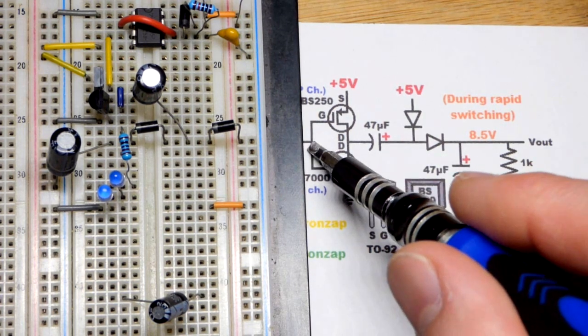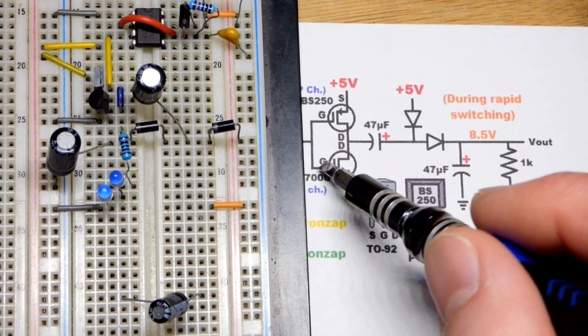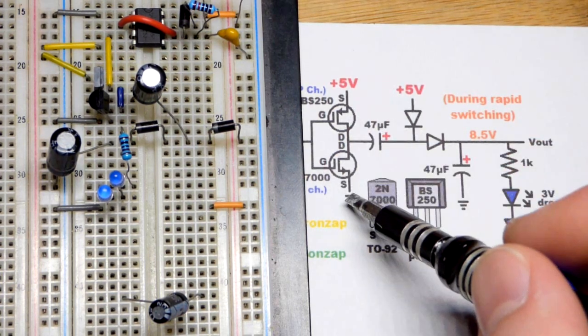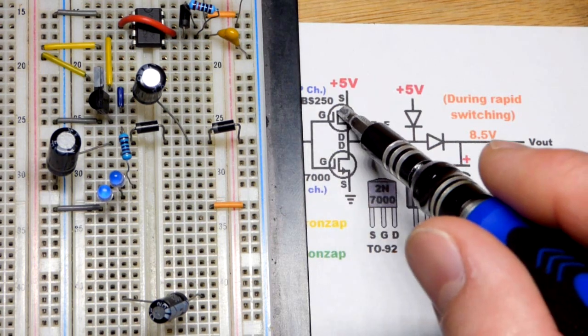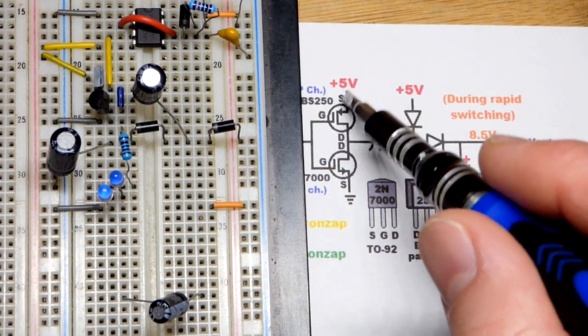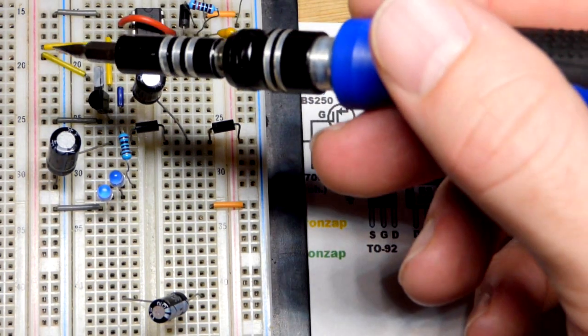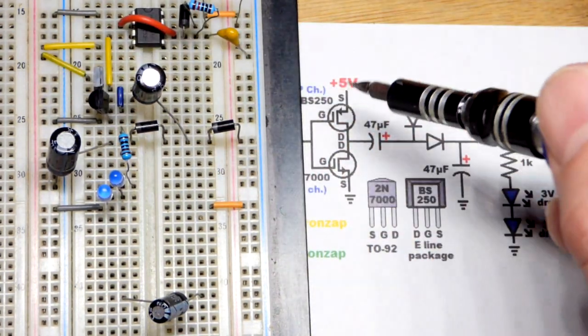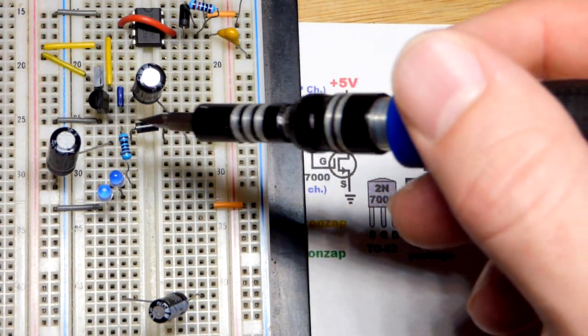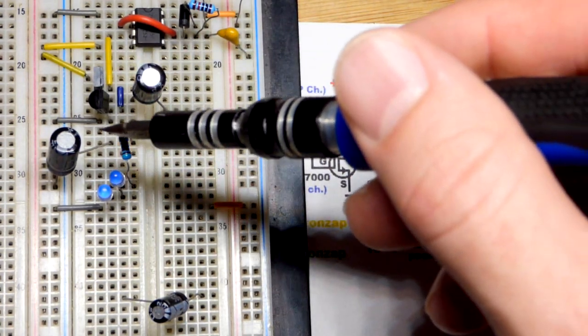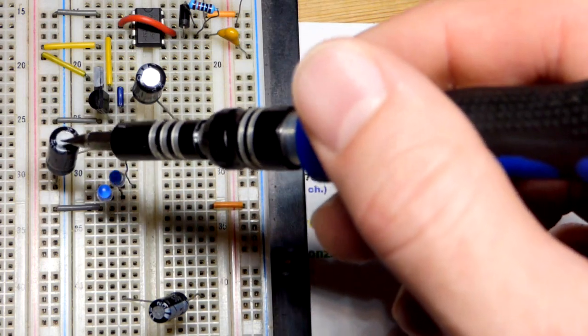When the 555 timer output flips, the gates have the same voltage across them, so there's no way both transistors can be on at the same time. When we have a low output, the P-channel enhancement mode MOSFET will turn on. We get a positive supply that comes through the drain into the capacitor and that pumps that voltage. It moves current, but ultimately the voltage transfers over to that capacitor.